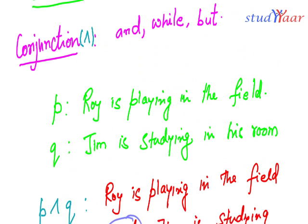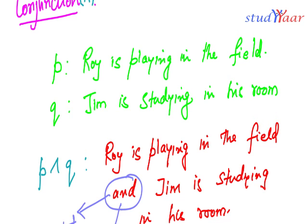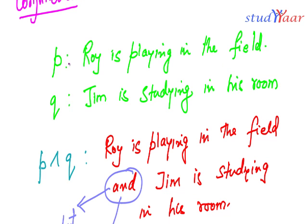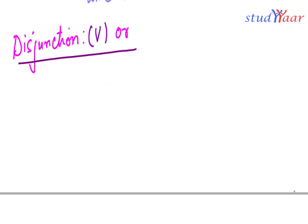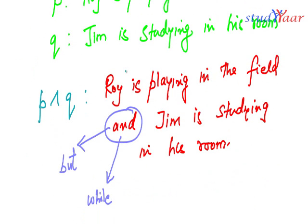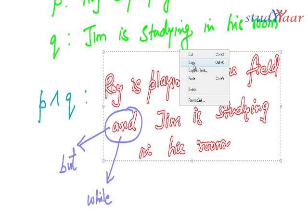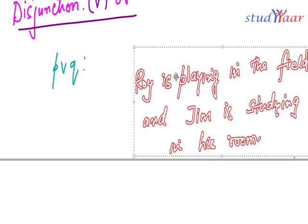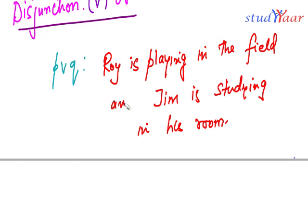Disjunction is similar to conjunction. If I have P and Q as before, I can write P disjunction Q — replacing 'and' with 'or.' So my disjunction statement would be: Roy is playing in the field or Jim is studying in his room.